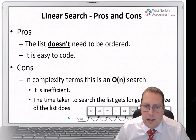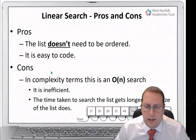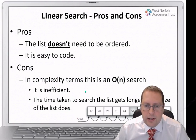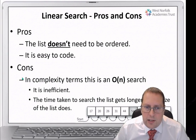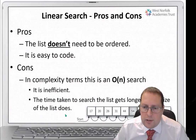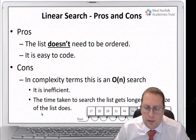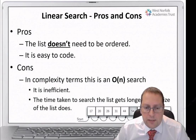Another advantage is that in computing it's very easy to code a linear search — you just tell it to iterate through a list until it finds what it's looking for. If it's a match, the search stops. The disadvantage is that it's inefficient. It's fine with a short list, but if you had a thousand items to search through it could take time, especially if the item you're looking for is at the end. The time taken to search gets longer as the size of the list increases.